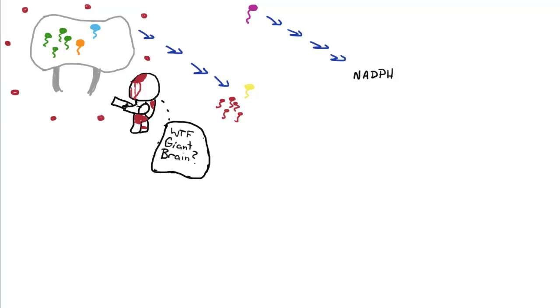So now we have all this ATP and NADPH. So in the next video, I'm going to cover the Calvin cycle, which uses this ATP and NADPH to make sugars.